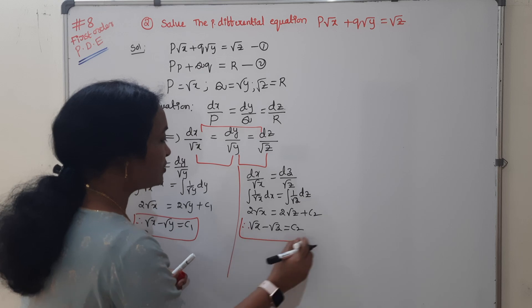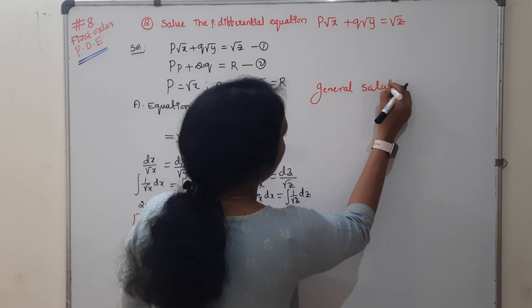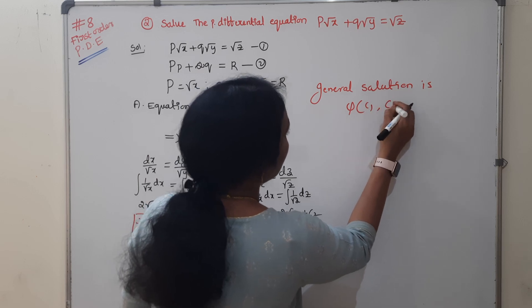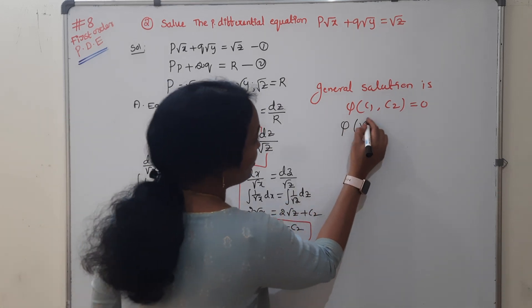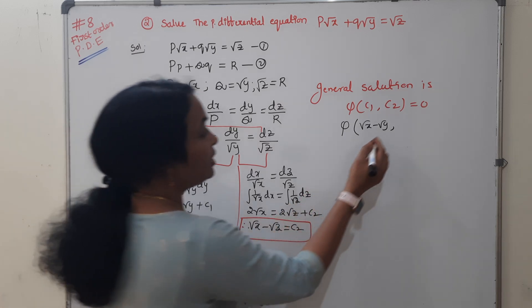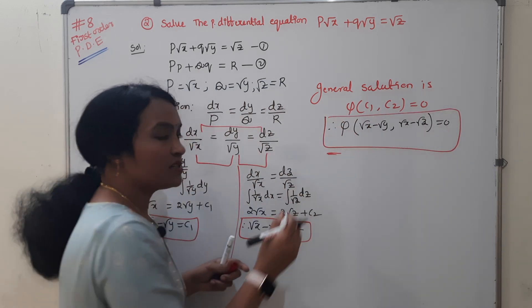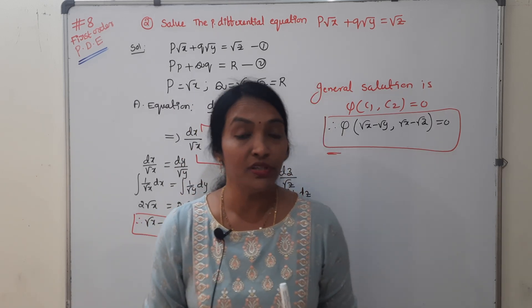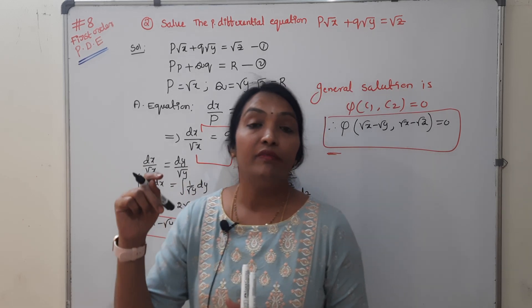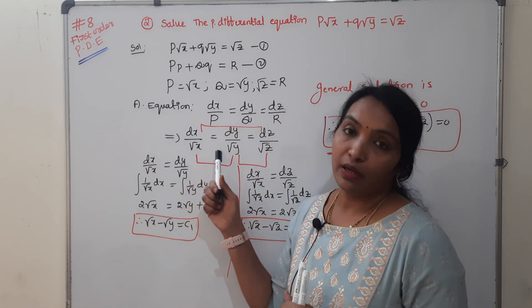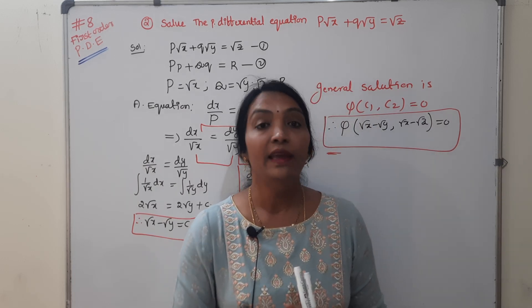We now have two solutions. The general solution is φ(c1, c2) = 0, where c1 = √x − √y and c2 = √x − √z. So the general solution is φ(√x − √y, √x − √z) = 0. After writing the auxiliary equation, if variable separable is possible, use the method of grouping; otherwise use the method of multipliers, which will be covered in the next video.